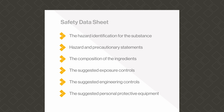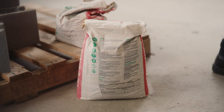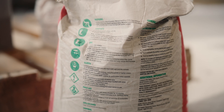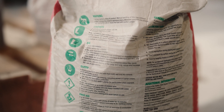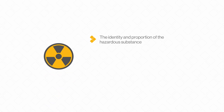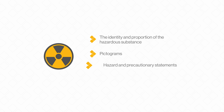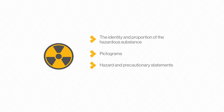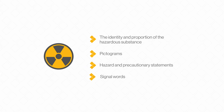The labels on containers of hazardous substances can also provide basic information which is readily accessible by those employees who use it. The basic information includes the identity and proportion of the hazardous substance, pictograms, hazard and precautionary statements, and signal words.